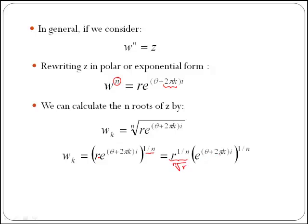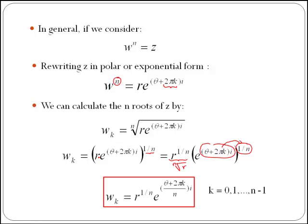And then in the second case, remember you just need to multiply the exponents. So that will give us the general formula to find the n roots of a complex number, which is r to the power of 1 over n by e to the power of theta plus 2 pi k over n i.